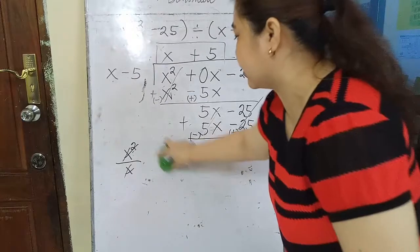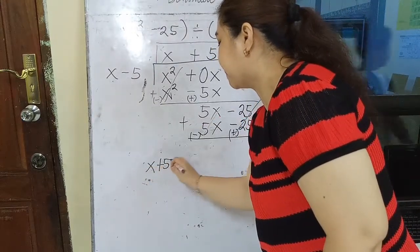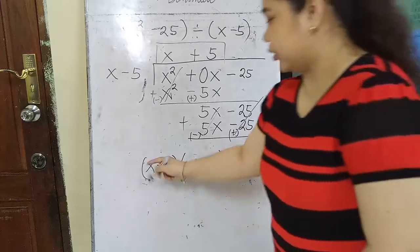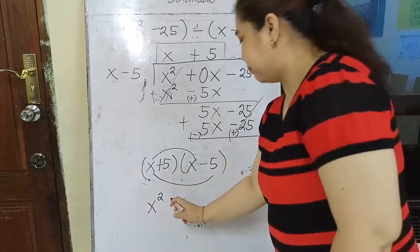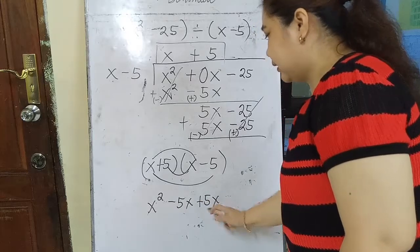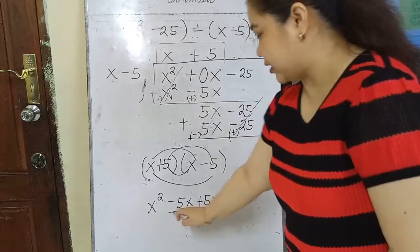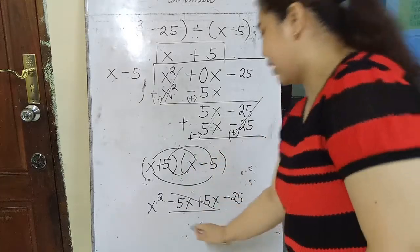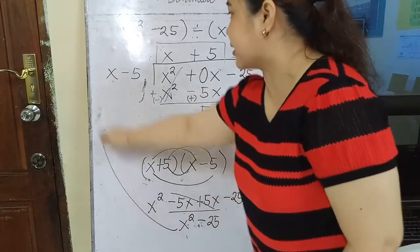Let's check the answer. x plus 5 times x minus 5, using the FOIL method: x squared, then outer minus 5x, then inner plus 5x, and last term negative 25. Combine like terms: negative 5x plus positive 5x cancels, leaving x² minus 25. That matches the original.